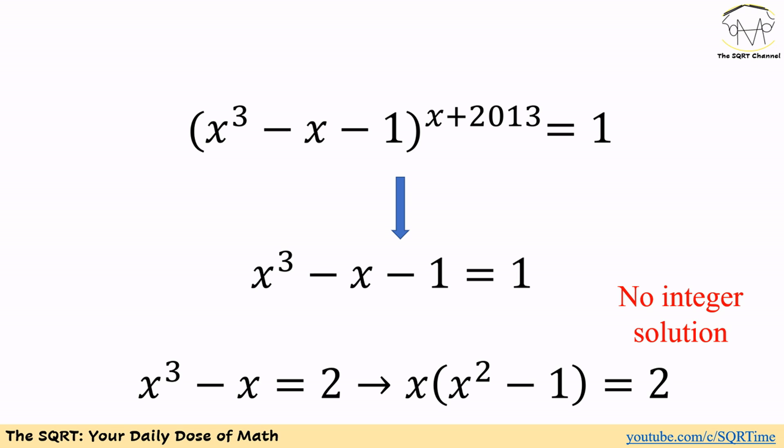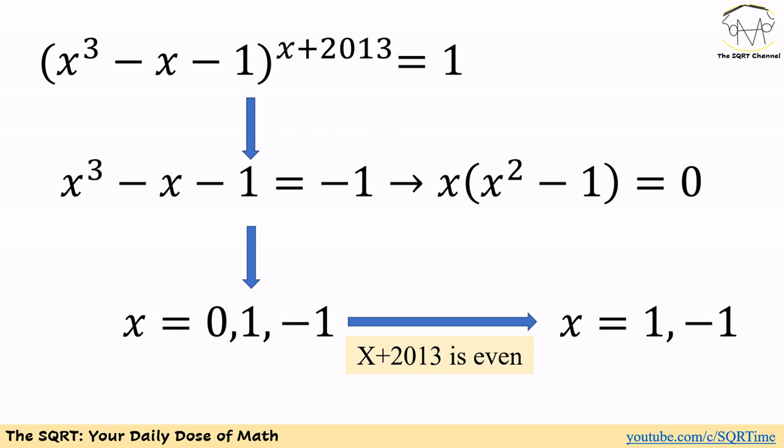Let's try a different option. The last option is when base equals -1. If base equals -1, then x³ - x - 1 = -1, so x³ - x = 0.